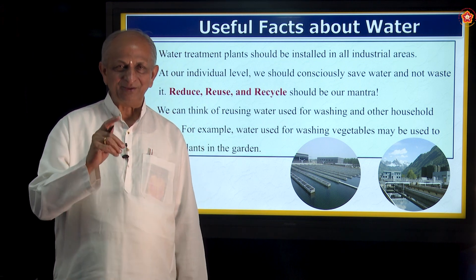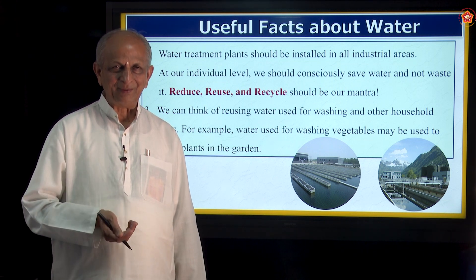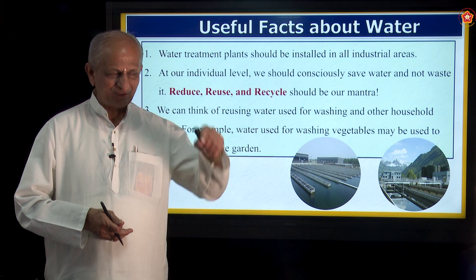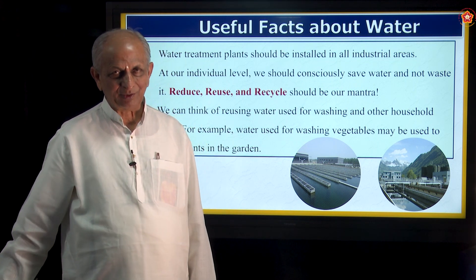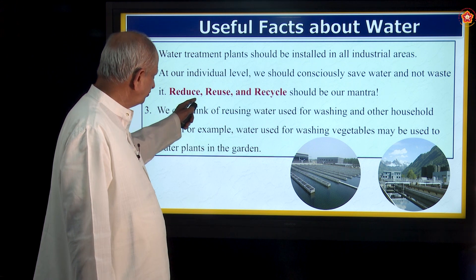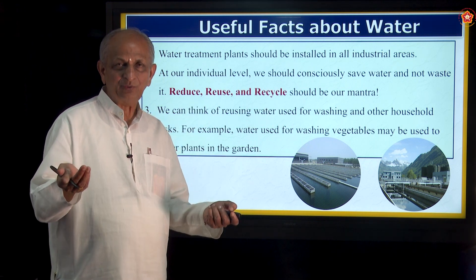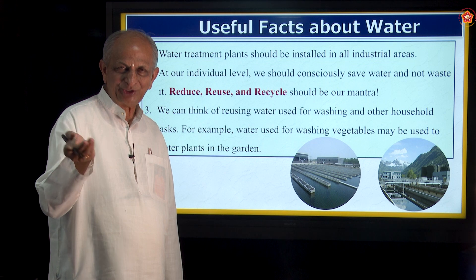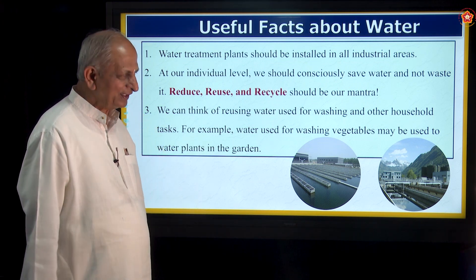If one person wastes one drop of water, in India there are about 137 crore people — 137 crore drops of water means how many liters? So you are not supposed to waste water. It reduces the quantity of water being used. It does not mean you should not wash — we should not waste water. Nowadays people use tissue paper, which is a saving of water in a way, but it does not wash properly. Reducing is one thing; reusing means using water again.